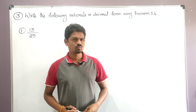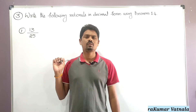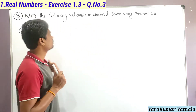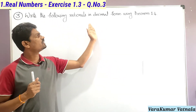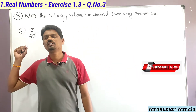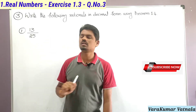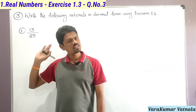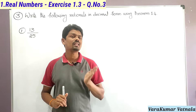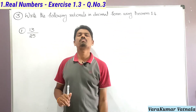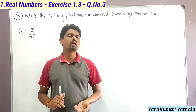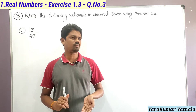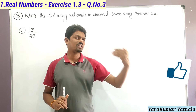Hello students, welcome to my channel 'Learn More Math.' My name is Varakmar. Today we are going to solve a problem from the chapter Real Numbers — Exercise 1.3, third problem. The question asks us to write the following rational numbers in decimal form using Theorem 1.4. He has given some rational numbers, and totally there are five bits in the third problem. This is the first bit: 13 by 25. He is asking to write the given rational number in decimal form using Theorem 1.4.